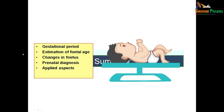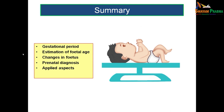To summarize, we discussed the gestational period, how to calculate it from fertilization and from the first day of the last menstrual period, how to assess fetal age using ultrasound measurements, the changes occurring in the fetus from the 9th week till birth grouped in 4 to 5 week intervals, the different prenatal diagnostic methods encountered during antenatal checkups, and some applied clinical aspects. This concludes the session on the development of the fetus from the 3rd month till birth.